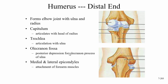The olecranon fossa is a posterior depression that accommodates the olecranon process of the ulna. To identify the lateral and medial epicondyles: in anatomical position the thumbs point laterally, so the radius (on the thumb side) corresponds to the lateral epicondyle. The ulna is on the little finger side, which points medially, so that's the medial epicondyle.